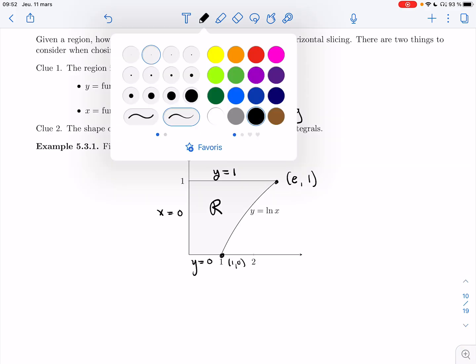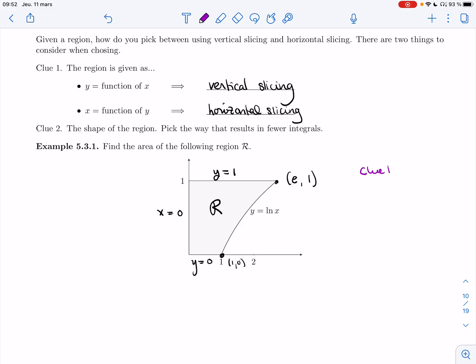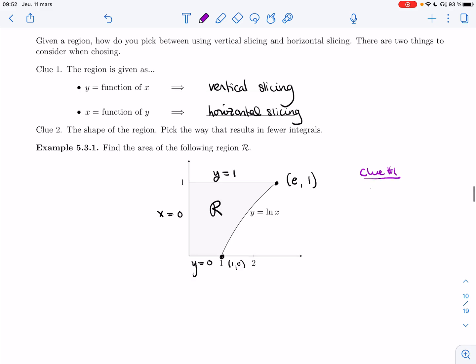If you look at clue number one, because of y equals ln of x, then it'd be easier to use vertical slicing. But vertical slicing would require splitting the region up into these little vertical sticks, and if you notice, something happens here. When I look at the bottom, it switches from y equals 0 to y equals ln of x.